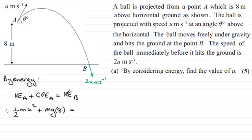And this is equal then to the kinetic energy at B, which will be half the mass again, m, times the velocity squared. And the velocity this time is 2u. So it's going to be 2u all squared.